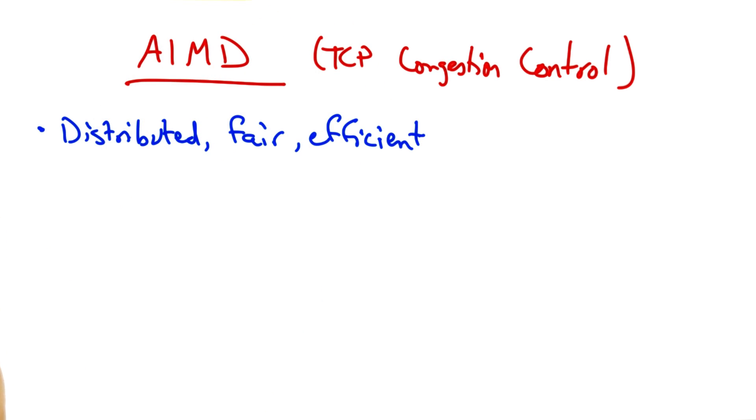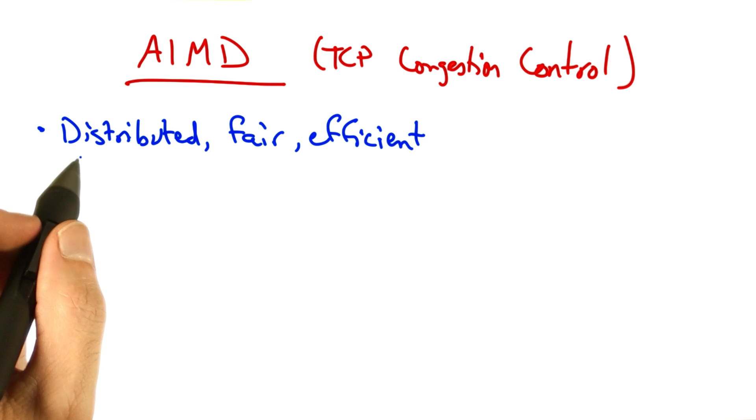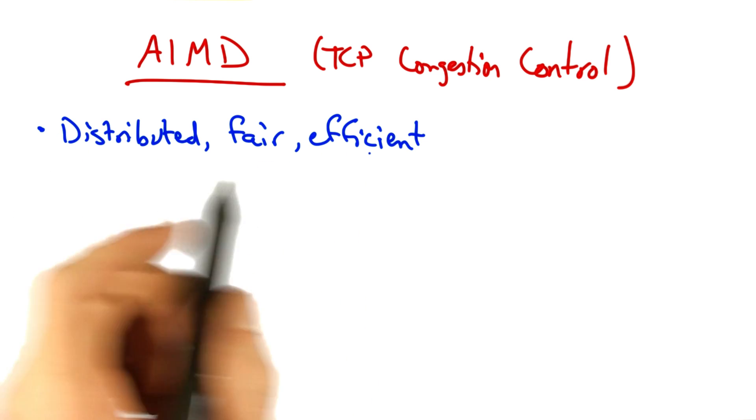The result is the additive increase, multiplicative decrease congestion control algorithm. The algorithm is distributed, meaning that all the senders can act independently. And we've just shown using the phase plots that it's both fair and efficient.